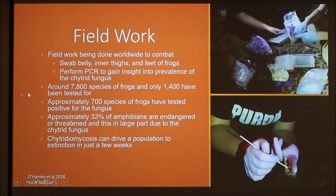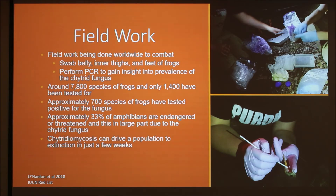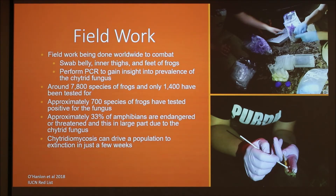From this field work, we've found that out of approximately 7,800 species of frogs, only 1,400 have been tested, and 700 species have tested positive. A huge thing about this disease is that approximately 33% of all species of amphibians are either endangered or threatened right now, and this is really due to the chytrid fungus. Chytridiomycosis can drive a perfectly healthy population to extinction in just a few weeks — it's really fast-acting and is destroying not just frog populations but also salamanders.